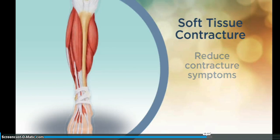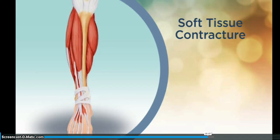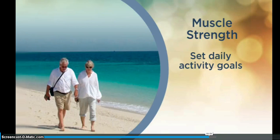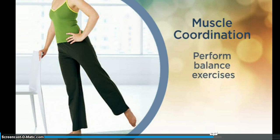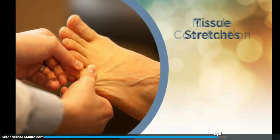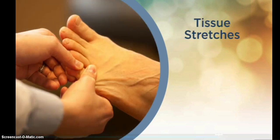The only way to rebuild muscle strength is to use the muscles. We encourage you to set daily activity goals — for example, to walk a little farther each day. The only way to improve muscle coordination is to perform balance exercises. A relief therapist will show you home balance exercises and help you perform them correctly. The only way to release soft tissue contractures is to stretch the tissue. A relief therapist will show you how to perform these home stretches and give you a video for use at home.